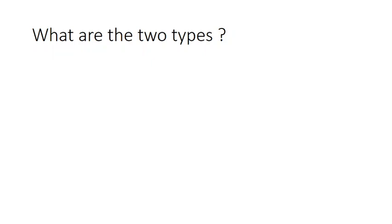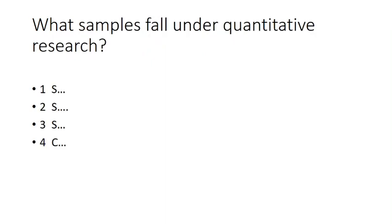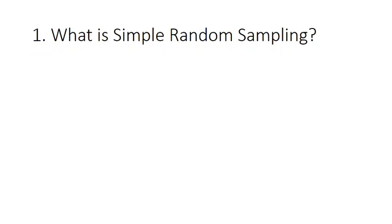In this video I will talk about only probability sampling. There are four types, which I summarize as '3S and C' or 'S-cubed C' to help you remember: stratified, simple random, systematic, and cluster sampling. The first type is simple random sampling. As the name suggests, you select participants for your study randomly. In simple random sampling, all members of the research population have an equal chance of being selected.